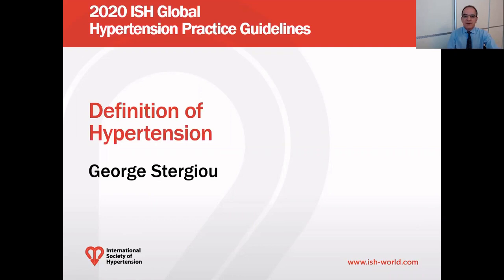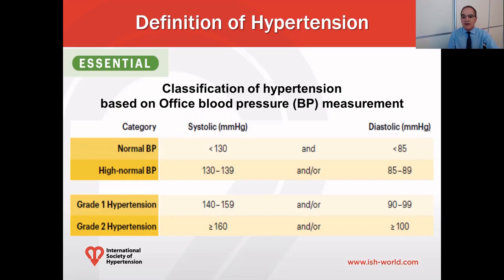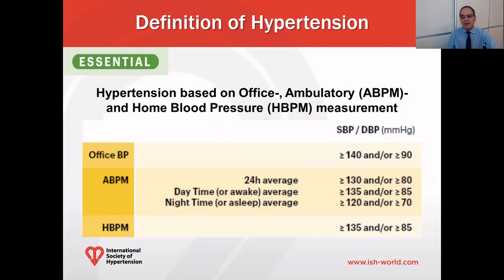My name is George Sturgio. I'm a professor of medicine at the University of Athens in Greece. I will present the ISH guidelines on the definition, classification, and diagnosis of hypertension. Hypertension is defined as office blood pressure equal to or higher than 140 mmHg systolic and/or 90 mmHg diastolic. We recommend two grades: grade 1 for systolic 140–159 and/or diastolic 90–99, and grade 2 for blood pressure equal to or higher than 160/100.